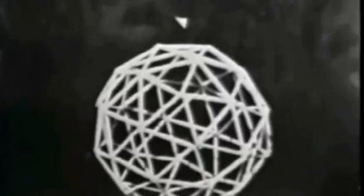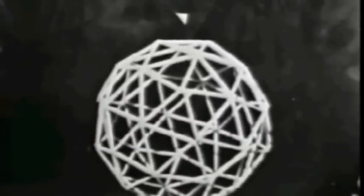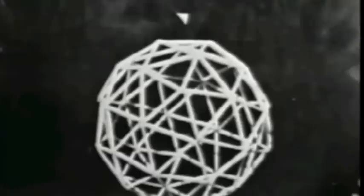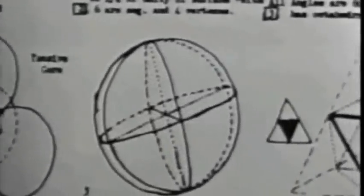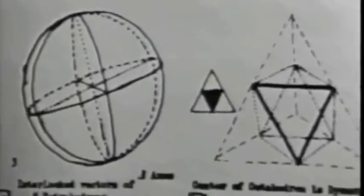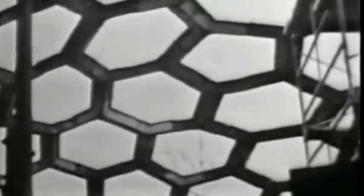Beneath apparently diverse natural phenomena lies a basic coordinate system, and by applying that system to design problems, strikingly simple solutions can be found. To describe that coordinate system, Fuller evolved his synergetic energetic geometry — a mathematics which accommodates the requirements of many physical laws. This system gave him the mathematical basis for geodesic construction.